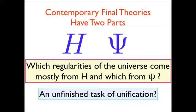So from this point of view, contemporary theories, final theories that are supposed to apply to everything, have two parts. They have a dynamical theory, say superstring theory, and they have a theory of the quantum state.